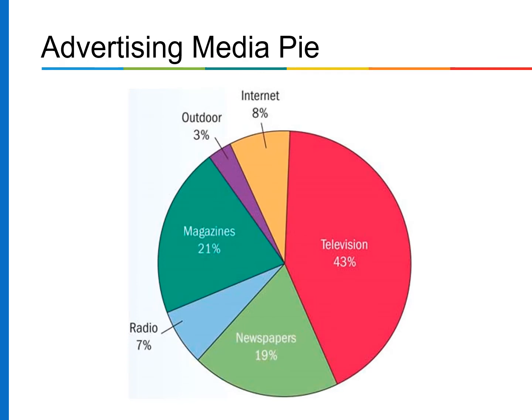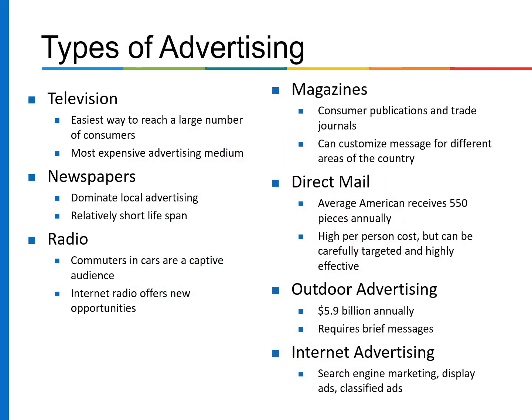The Advertising Media Pie shows that television accounts for the largest share at 43%, followed by magazines at 21%, internet at 8%, radio at 7%, outdoor at 3%, and newspaper at 90%. Marketers must choose how to allocate their advertising budgets among various media, as all media offer advantages and disadvantages, and must also choose media appropriate for their message and product.